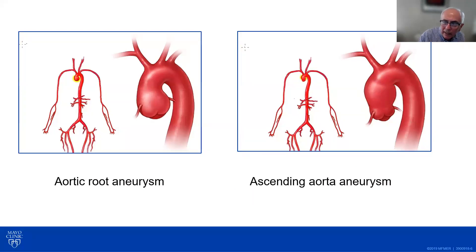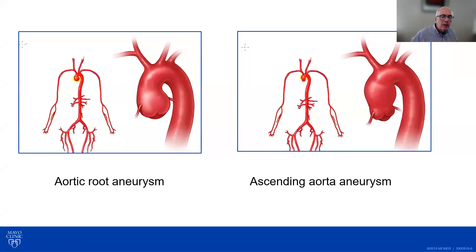By definition, an aneurysm is when an artery or the aorta measures 1.5 times its normal size. On the left, you can see an aneurysm affecting the aortic root — we saw an image of a normal aortic root earlier. On the right, you can see that the aortic root is normal, but above it, the ascending aorta is aneurysmal. This illustrates what an ectatic aorta and what a true aneurysm each look like on imaging.